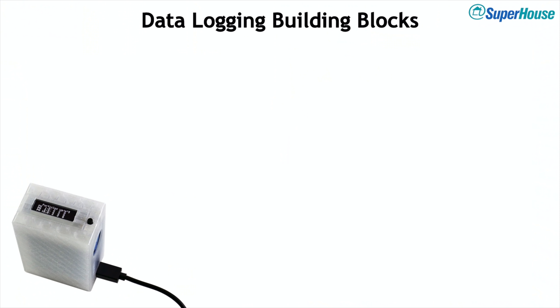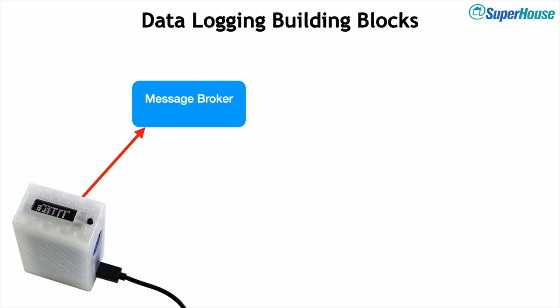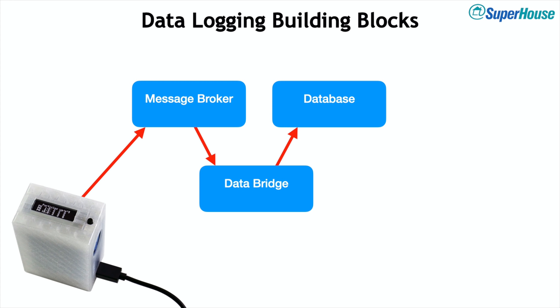In order to do this we're going to need four different software components. First we need something to receive the messages from the sensor — we're going to use a message broker, which gives us a universal way of taking data from all sorts of different sensors. We also need a database to store the data so we can look back in time. We need a data bridge to get the data from the broker into the database, and finally a charting system to generate charts of the values over time.